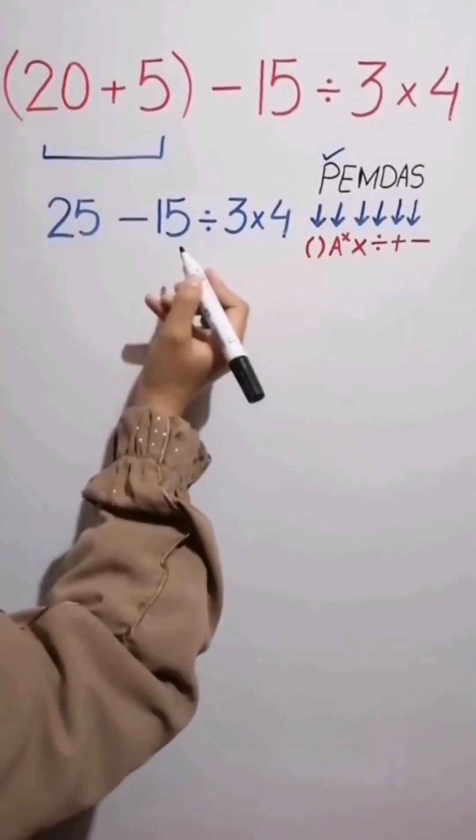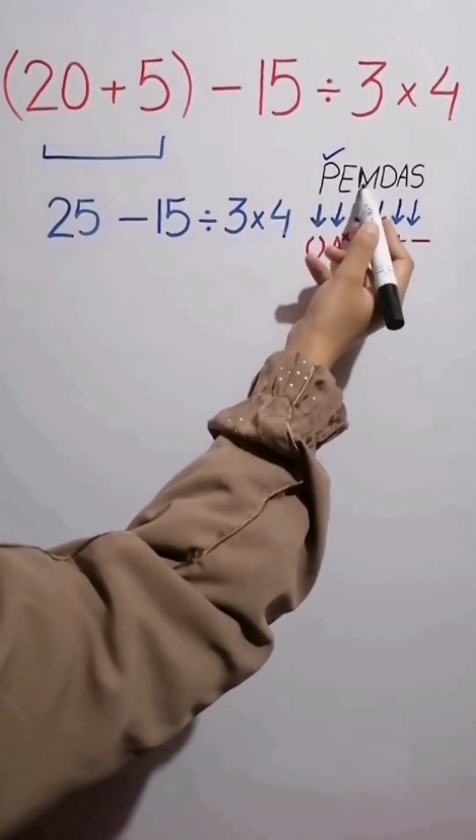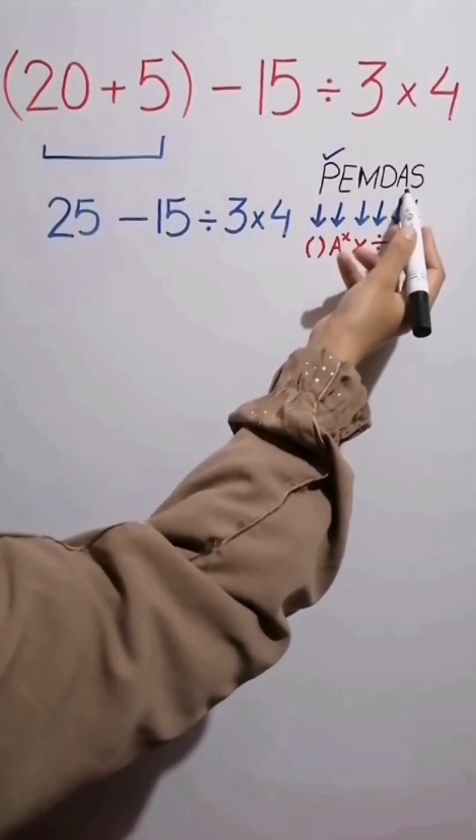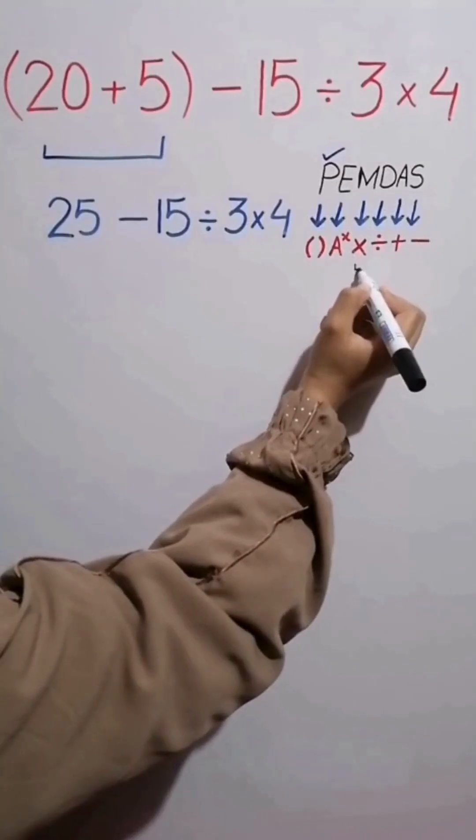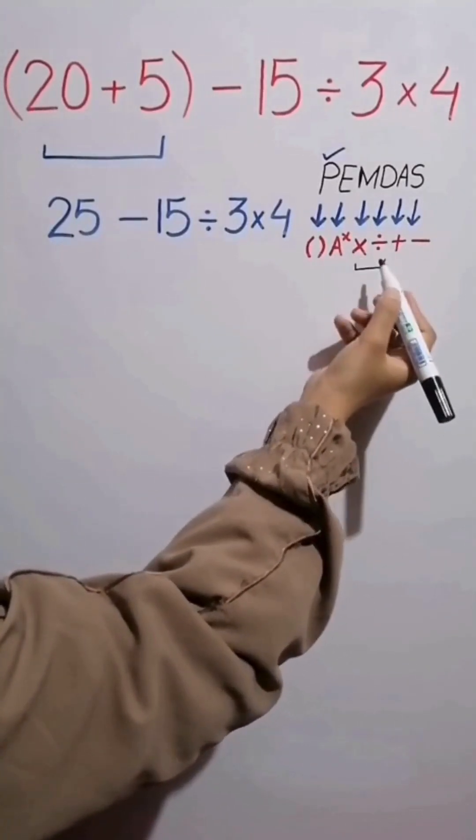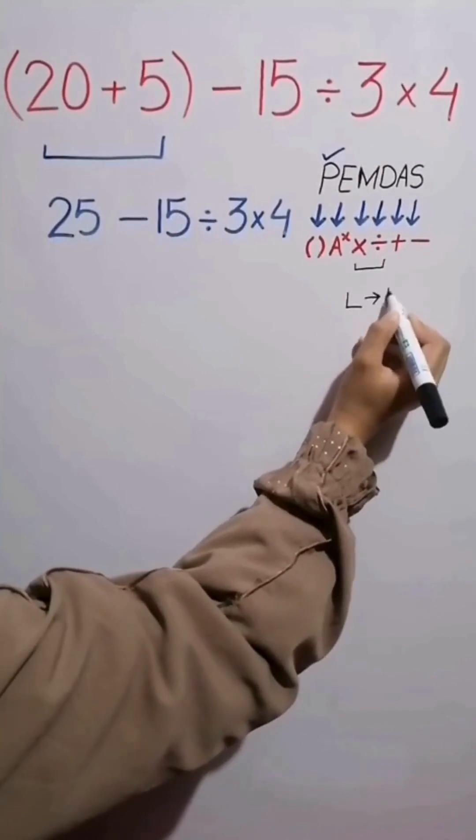In the next step we move on to the division and multiplication because multiplication and division have higher priority than subtraction. However, it's very important to note that multiplication and division have exactly the same level of priority. When we have both in an expression we move from left to right.